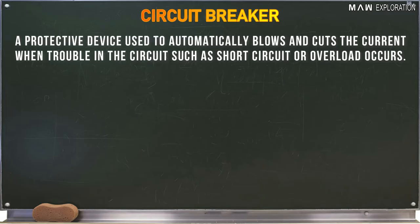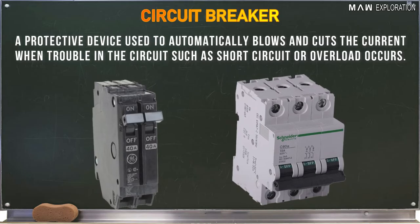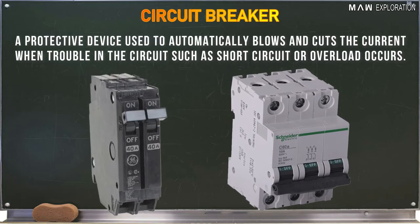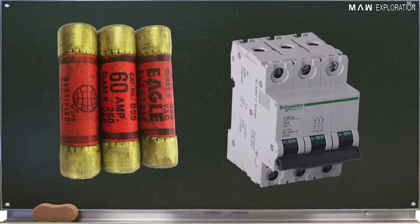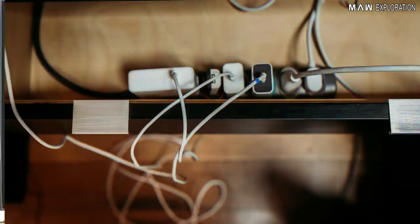Circuit breaker is a protective device used to automatically cut the current when a trouble happens in the circuit, such as short circuit or overload. As you may notice, fuse and circuit breaker have the same function. The only difference is that when trouble in an electric circuit occurs, the fuse will be damaged and needs replacement, while the circuit breaker will just switch off and needs to be switched back on.